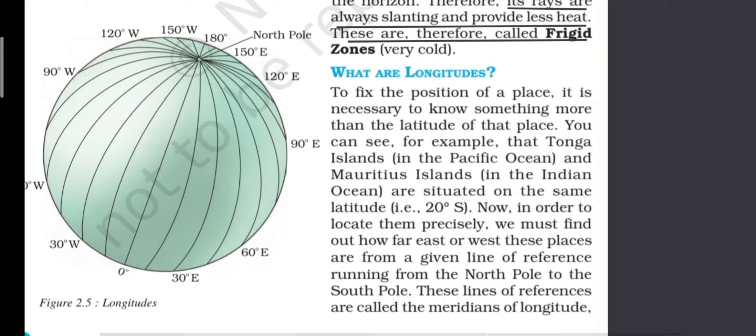Longitudes are imaginary lines, just like latitudes, and they run all around the earth but in a vertical position — from top to bottom — and they both meet at the north and south poles. So longitudes are imaginary lines that run around the earth vertically and meet at the north and south poles. These lines are known as the meridians of longitudes.